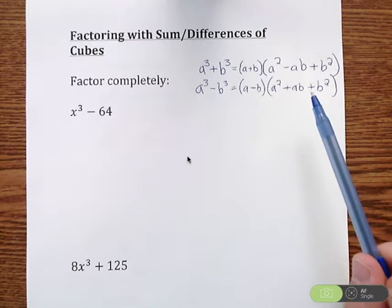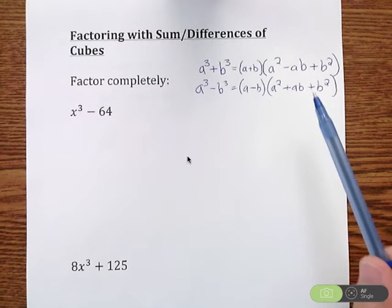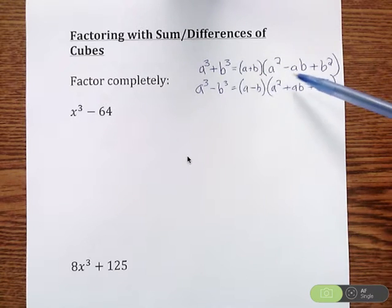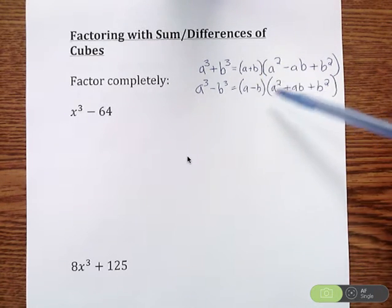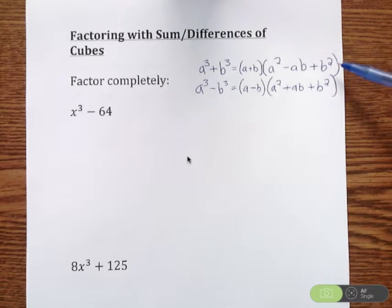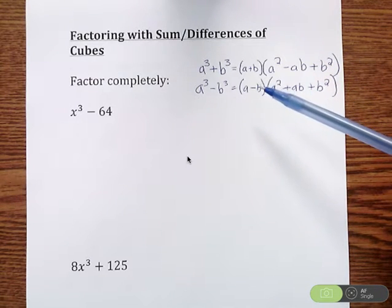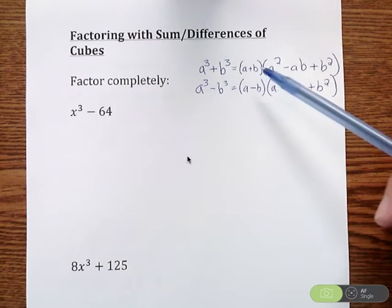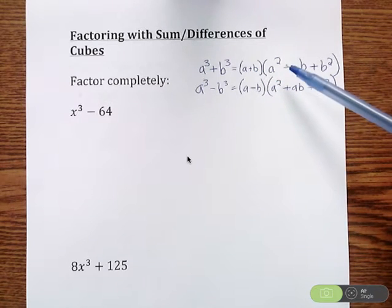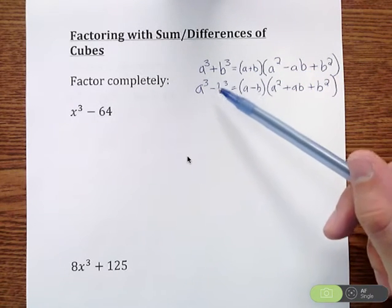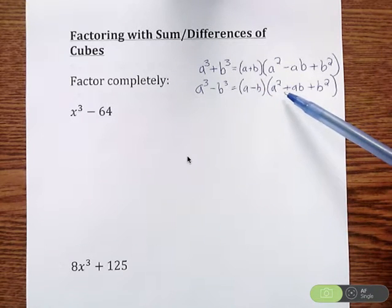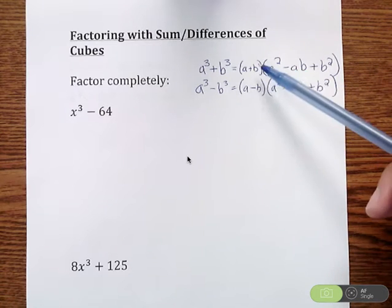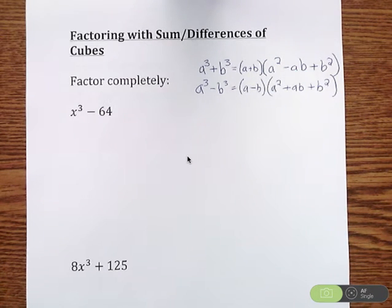Some people ask how do you remember these formulas? Well, both of them are the same where you're always going to have an a and a b, then a squared, ab, and b squared. The big difference is where the plus and minus signs are. If you're doing the sum of cubes, the plus sign comes first and then the subtraction sign. For the difference of cubes, you start with a subtraction and then have the plus sign. They both end with a plus sign — it's just that the subtraction sign switches when it happens.